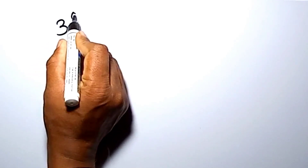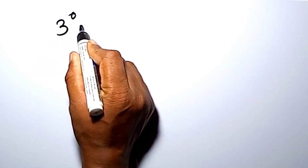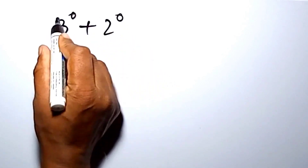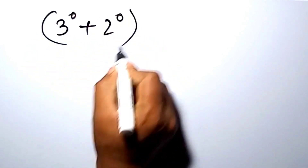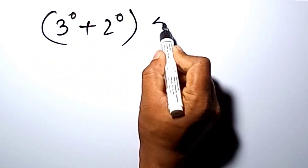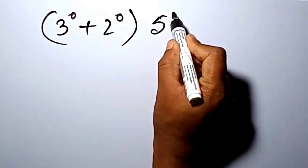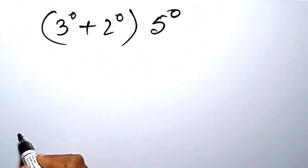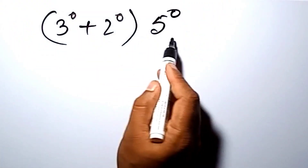What is the value of 3 to the power 0 plus 2 to the power 0, into 5 to the power 0? What is the value of this?